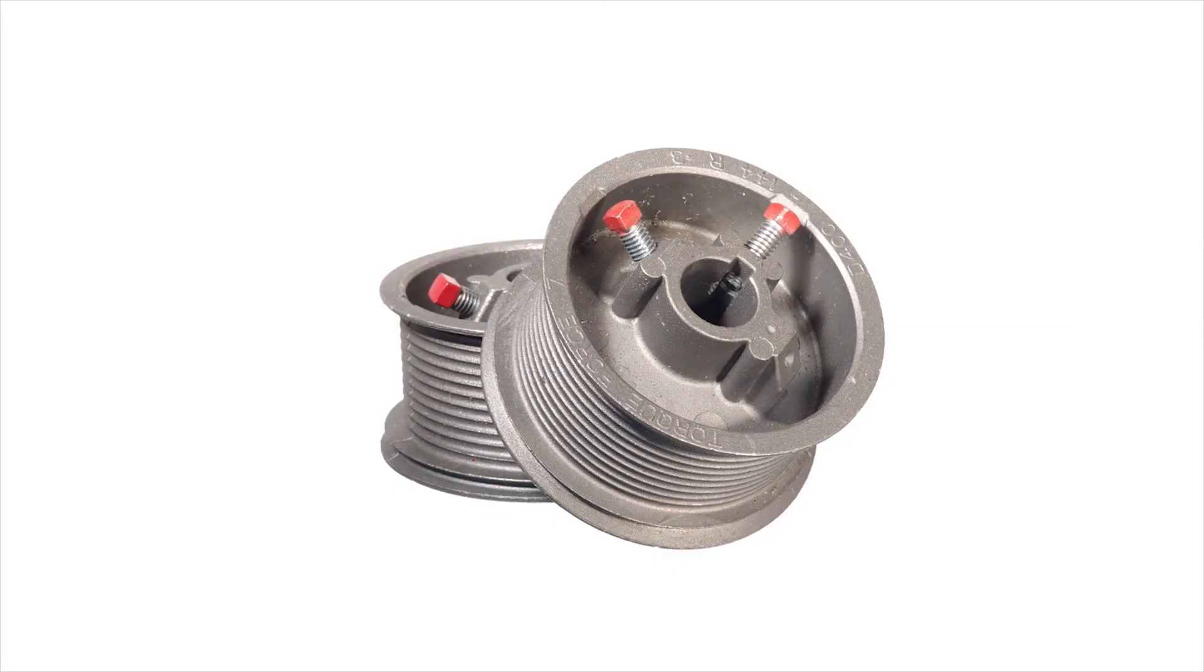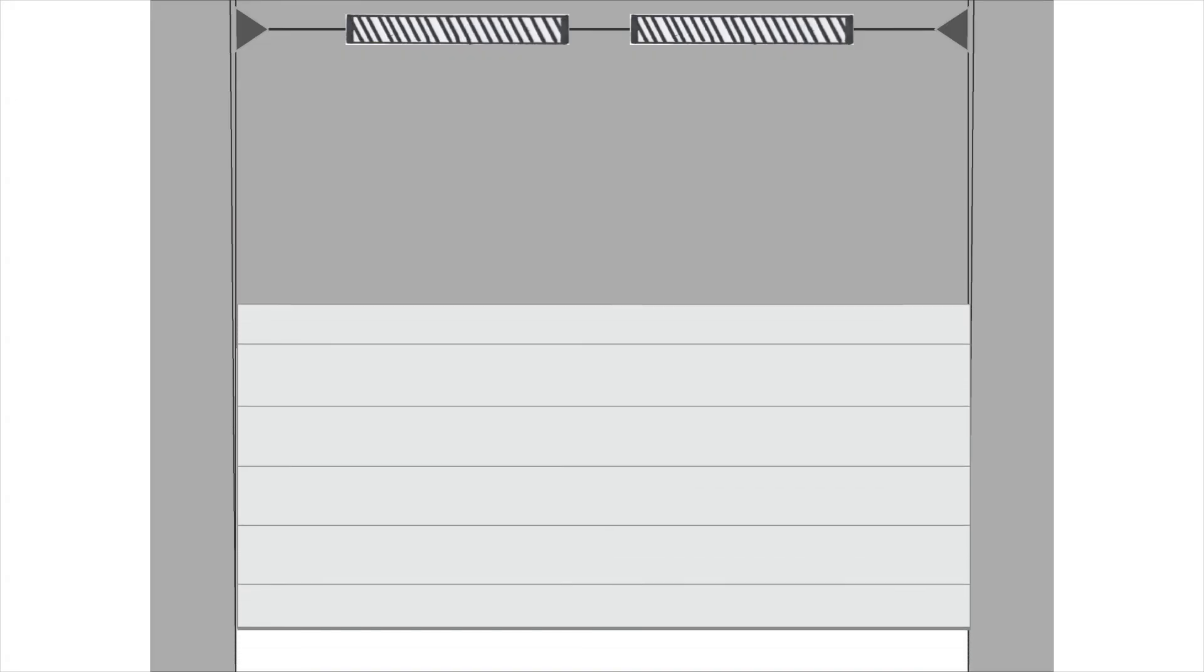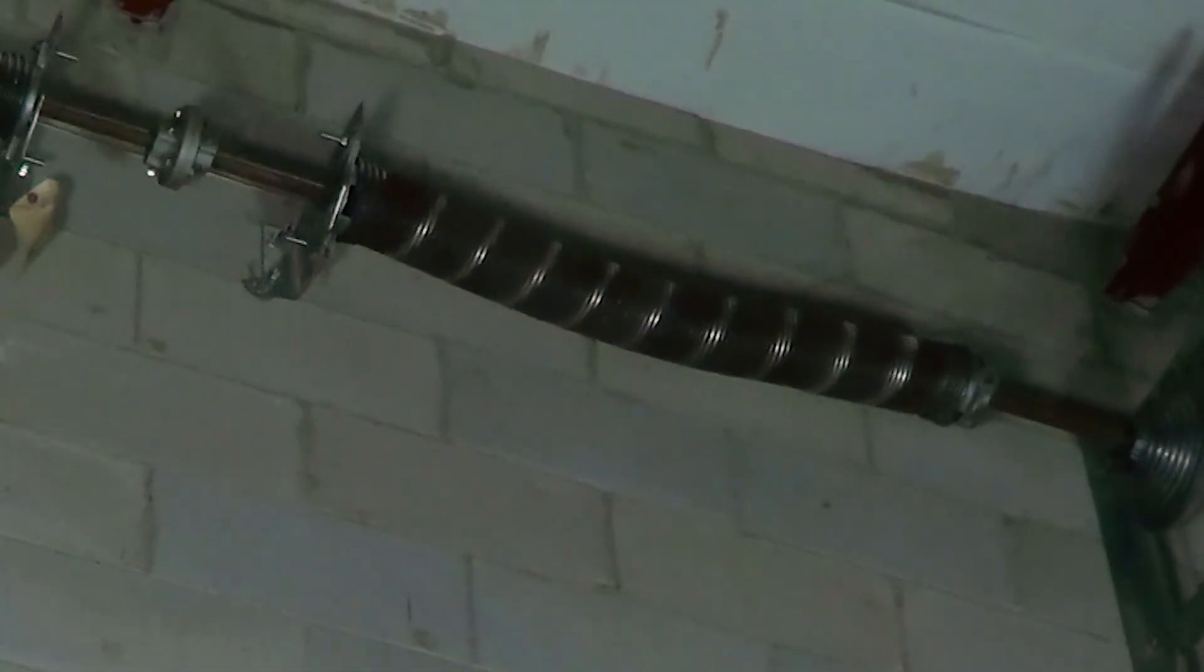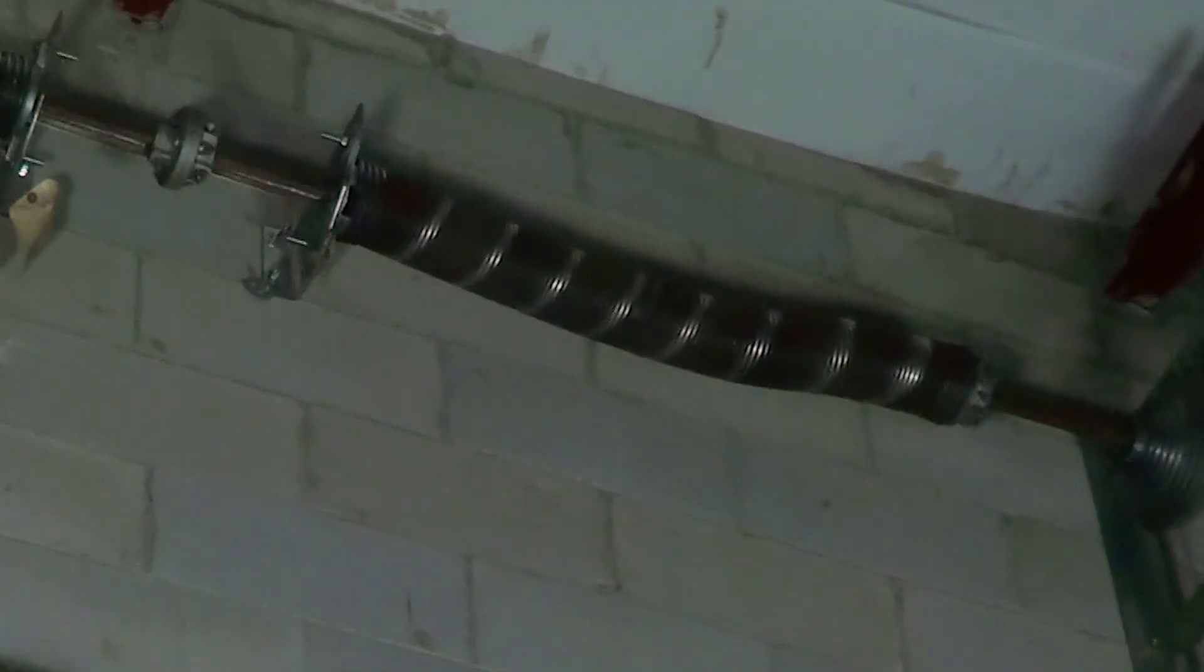If standard lift cable drums are used, the door will balance only at one point, and it will be impossible to operate. This is because the springs unwind as the door is raised, and the drums and cables don't pull as much as the door rises.